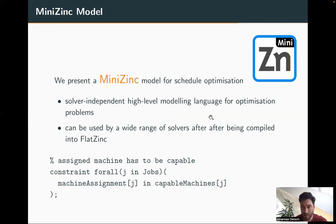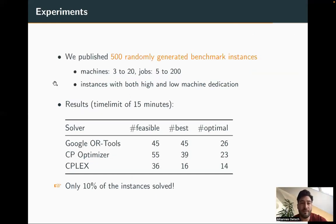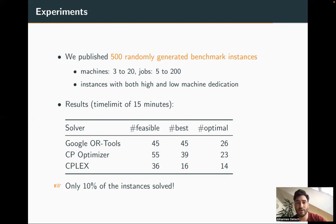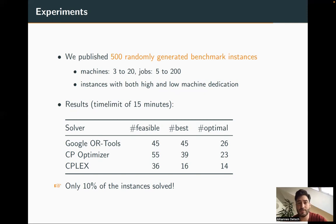We published 500 randomly generated benchmark instances. Although randomly generated, they are designed to reflect the structure of problems at the factory. The number of machines ranges from 3 to 20, and the number of jobs ranges from 5 to 200, so the benchmark set includes instances of realistic size. We also consider instances with both high and low machine dedication — high dedication means jobs can only be processed by a small number of machines. The time limit is 15 minutes, which is short but necessary since rescheduling must happen frequently to account for machine failures or newly arriving jobs.